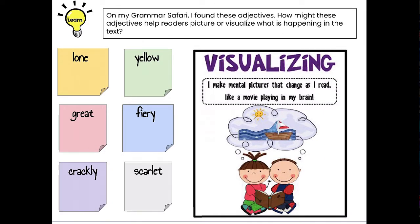On my grammar safari, I found these adjectives. How might these adjectives help readers picture or visualize what is happening in the text? Visualizing means I make mental pictures — I picture what's going on in my head. It's like a movie playing in my brain as I read the story. Some words I found were lone, yellow, great, fiery, crackly, and scarlet. Did you find those words too? Did you find more than six words? If so, nice job.